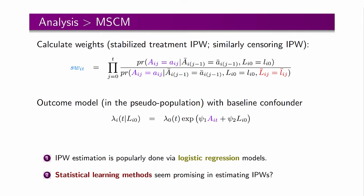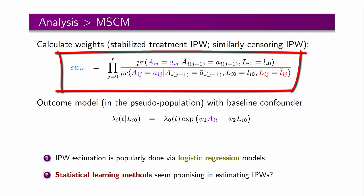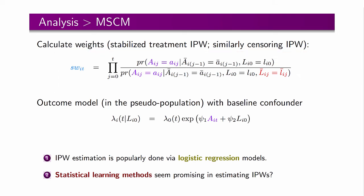From the literature, we know that the marginal structural Cox model estimates are highly sensitive to the weight model misspecification. Therefore, for the correct estimation of the causal parameter, the weights need to be estimated as accurately as possible. These models are popularly fitted using logistic regression models. As these weight models are generalizations of propensity scores, many researchers hypothesize that the statistical learning methods may be useful in estimating the weights as was the case in propensity scores.